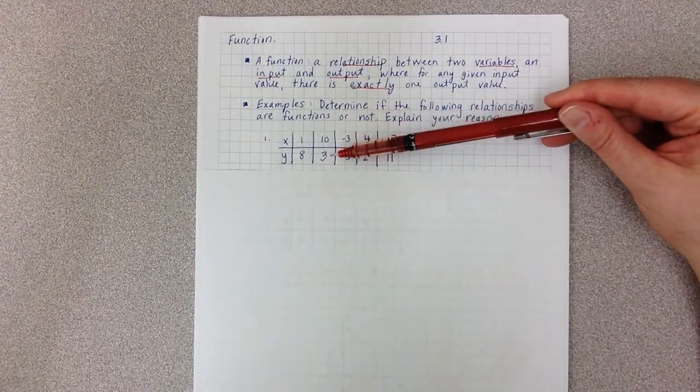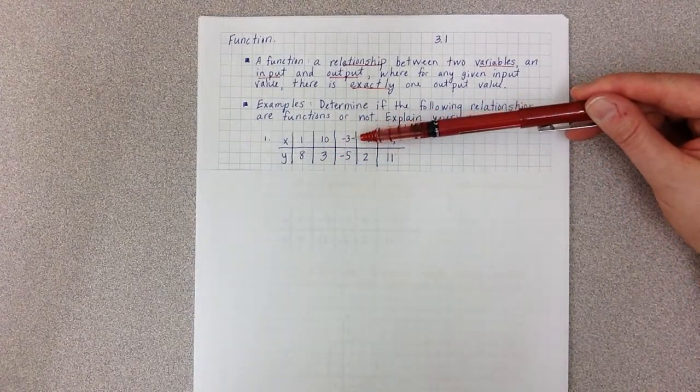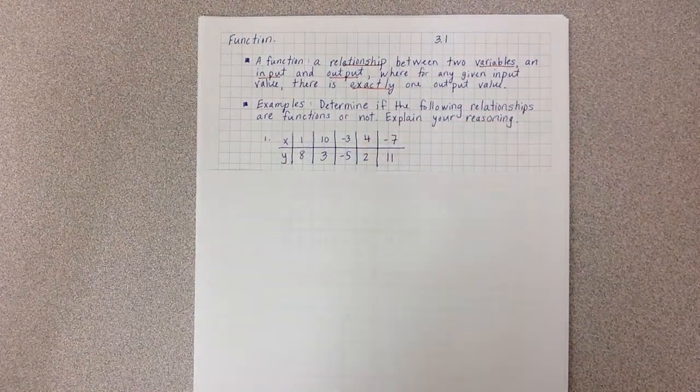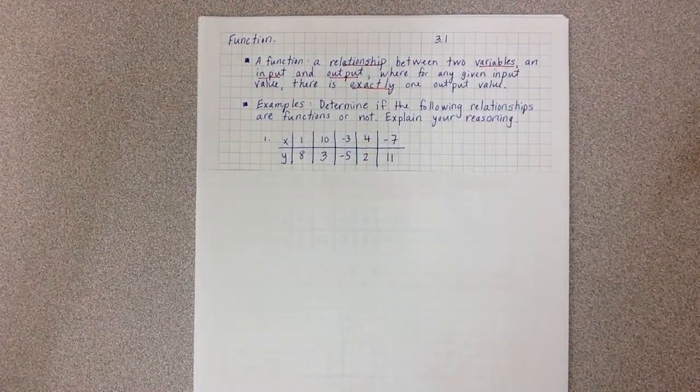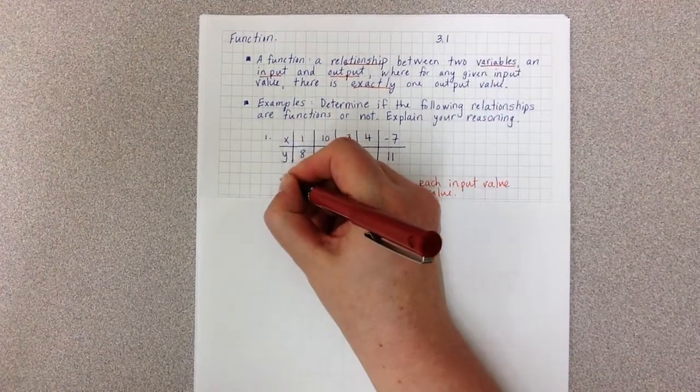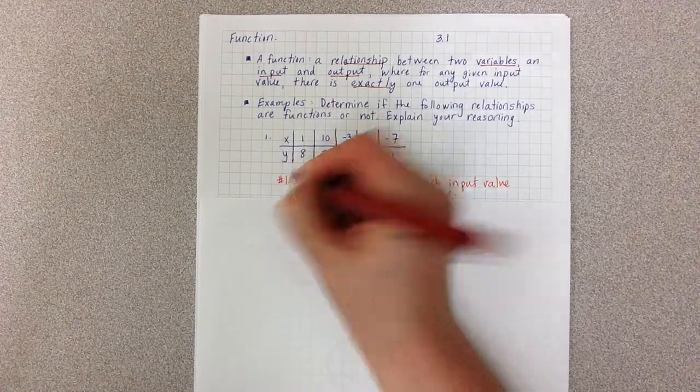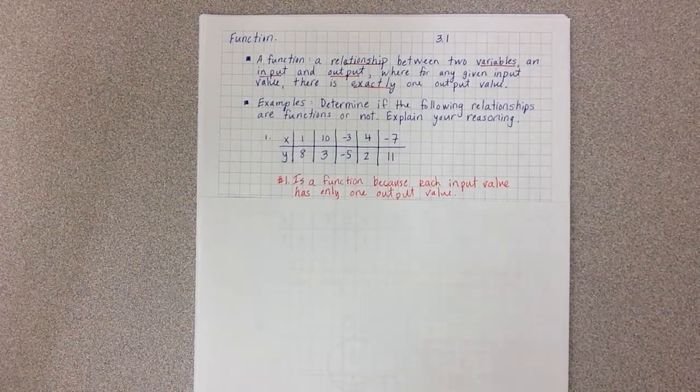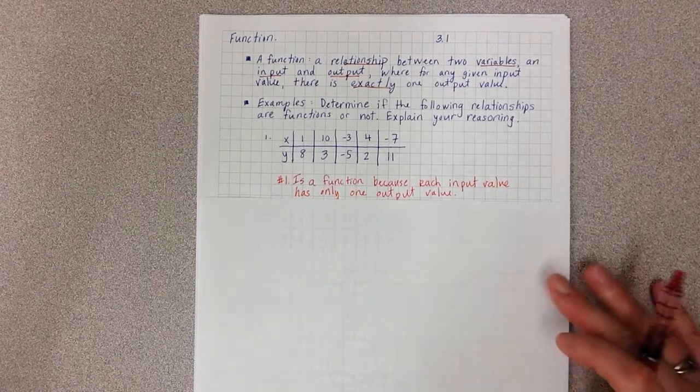10 doesn't repeat, it only has one output value, 3. Negative 3 doesn't repeat, so it only has one output value, -5, etc. So we should probably be a little more formal. Number 1 is a function because each input value has only one output value.